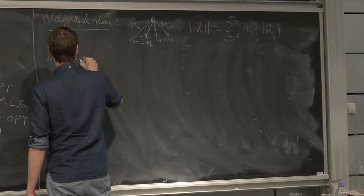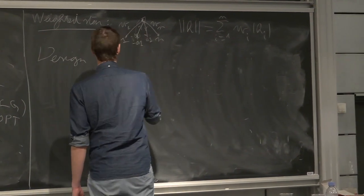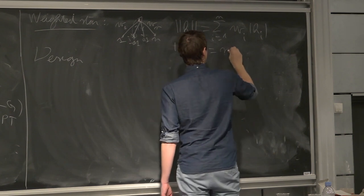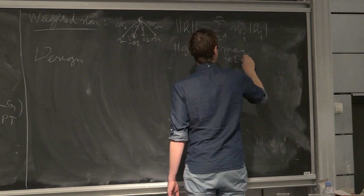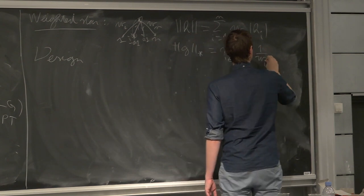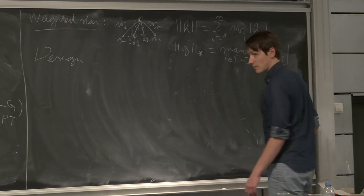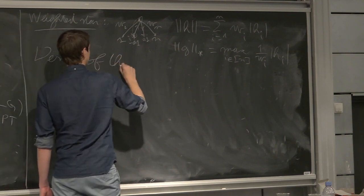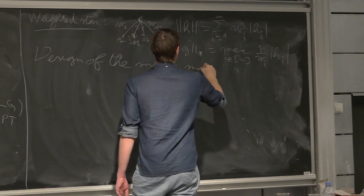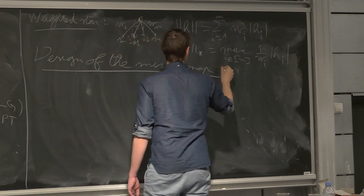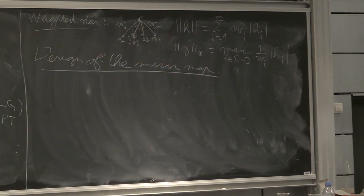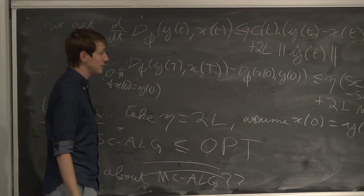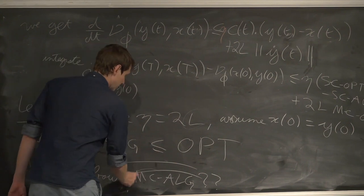Now, design of the mirror map. The dual norm is just a weighted L-infinity norm: the max for i from 1 to n of (1/w_i)|h_i|. That's the dual norm of this L1 norm. We want two things from the mirror map: to control its Lipschitz constant in the corresponding dual norm, which is this weighted L-infinity norm, and to control the movement cost.